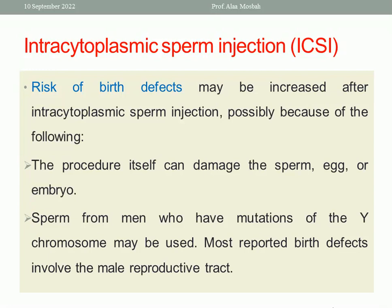There is a risk of birth defects with ICSI. Some studies suggest increased risk because the procedure can damage the sperm, egg, or embryo; sperm from men with Y chromosome mutations may be used; and most reported birth defects involve the male reproductive tract.